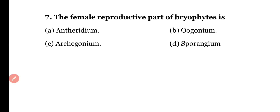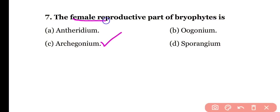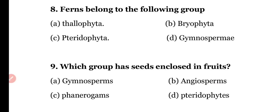Question number seven: the female reproductive part of bryophytes is (a) antheridium, (b) oogonium, (c) archegonium, or (d) sporangium. The correct answer is option C — the female reproductive part of bryophytes is archegonium, while the male part is antheridium.